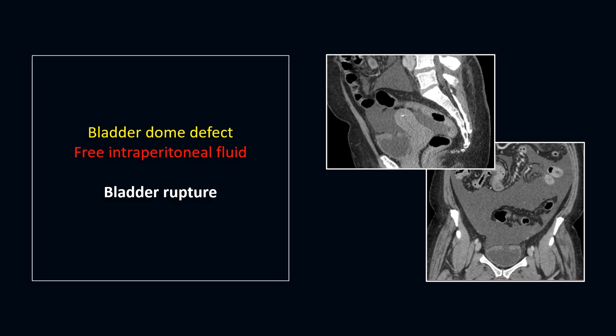In extraperitoneal bladder rupture, you see collection of contrast in the extraperitoneal space — between the urinary bladder and pubic symphysis, bounded by the transversalis fascia and parietal peritoneum, extending from the pelvic diaphragm to the umbilicus. CT cystography or fluoroscopy shows high-density fluid freely flowing in the peritoneal spaces. Localized collection in the retroperitoneum can become intraperitoneal if the anatomic boundaries are disrupted by trauma or prior surgery.